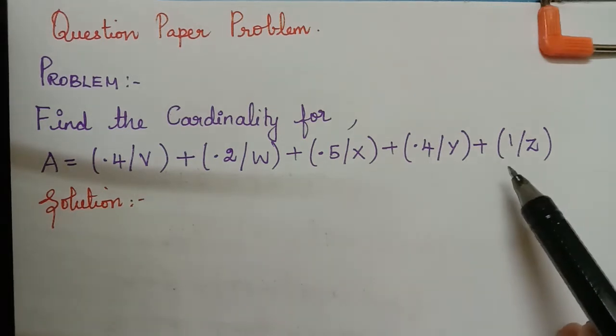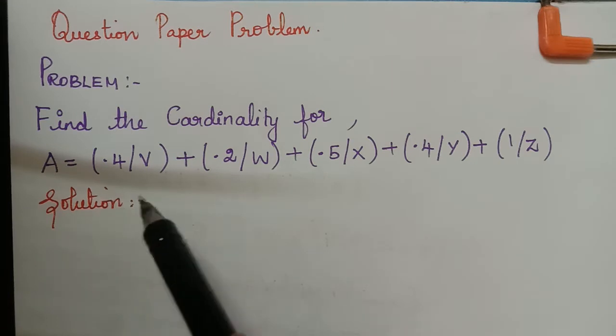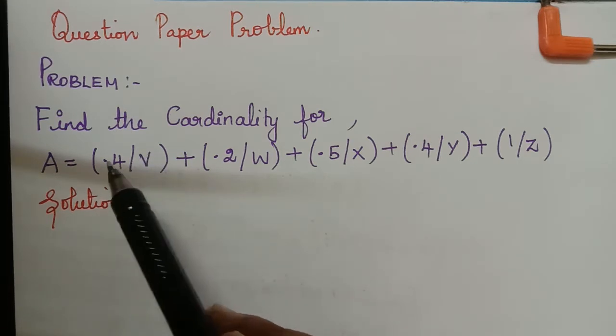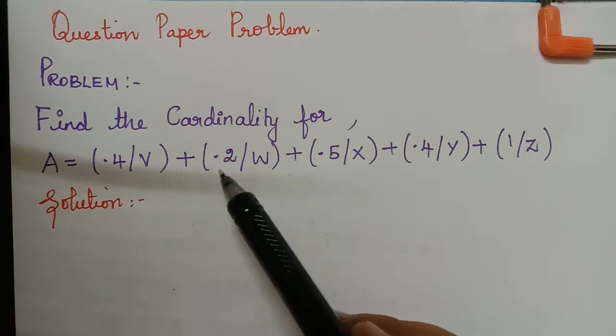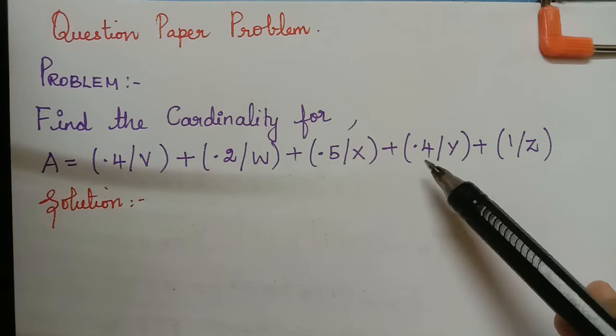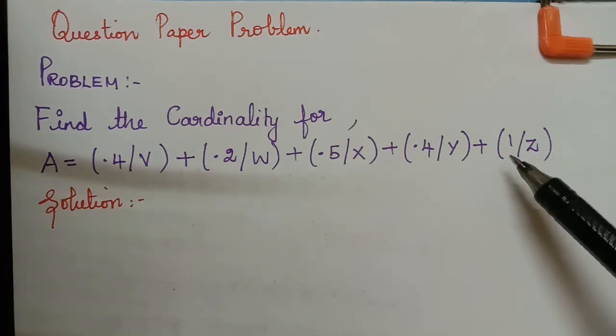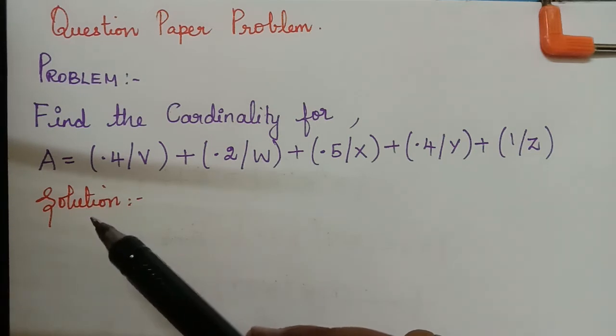Now this is another kind of representation of the fuzzy set where it represents that for the element V the membership grade is 0.4, for the element W the membership grade is 0.2, for X it is 0.5, for Y it is 0.4 and for Z it is 1. So now they are asking us to find the cardinality of this fuzzy set.